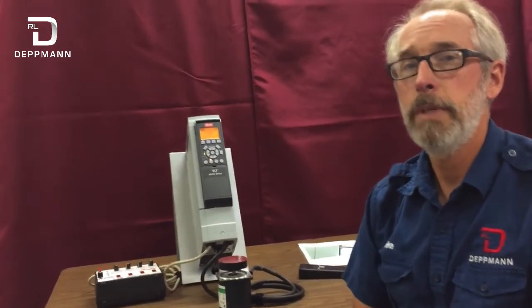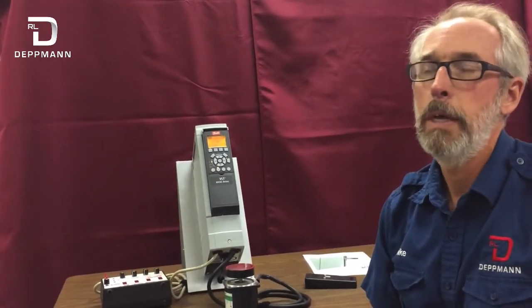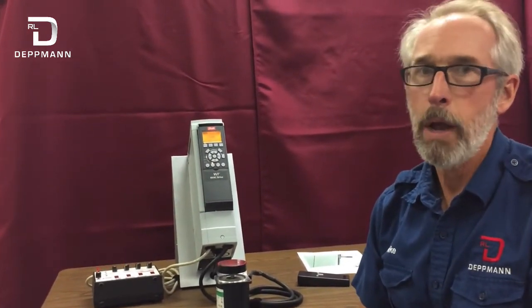Most motors here in the United States operate at 60 Hz. Every once in a while you may want to run that motor just a little bit faster to get a little bit more out of your pump or your fan. You can do that by changing a parameter in the drive.